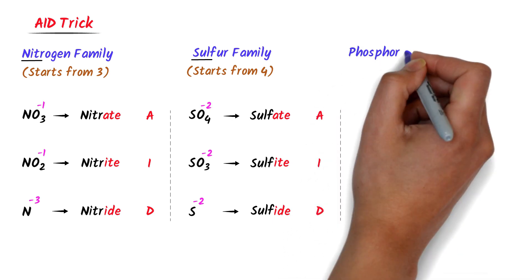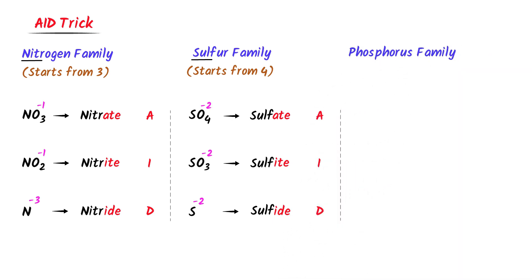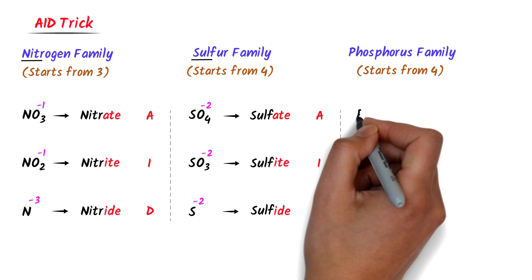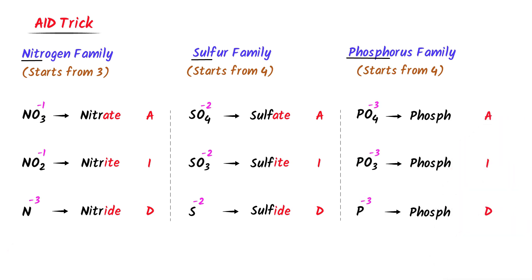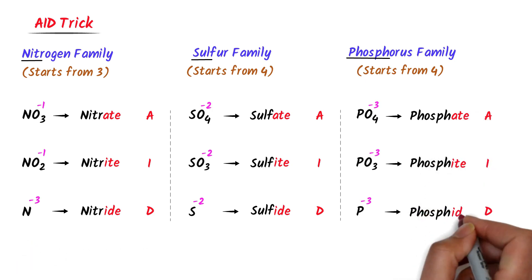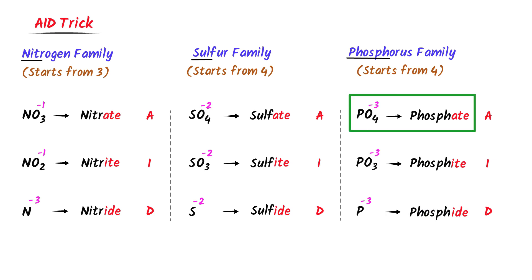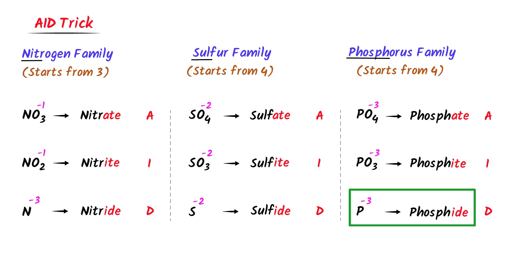Now the polyatomic ions of the phosphorus family. The polyatomic ions of phosphorus with oxygen also start from 4, like PO4, PO3, and P. The charge on each ion is negative 3. I take 'phosph' and write it in front of each ion, then use the AID trick. A stands for ATE, I stands for ITE, and D stands for IDE. So I get phosphate, phosphite, and phosphide. These are the polyatomic ions of phosphorus.